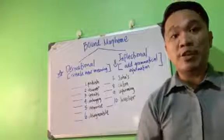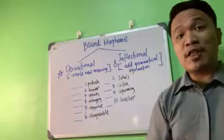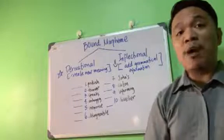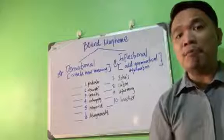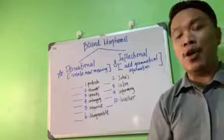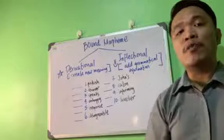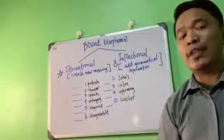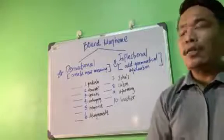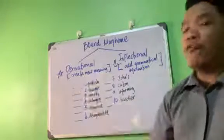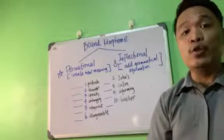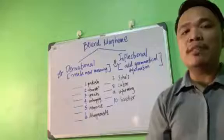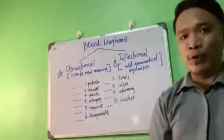Today, we're going to differentiate between derivational morphemes and inflectional morphemes. These morphemes are bound morphemes. As we all know, bound morphemes are dependent morphemes that cannot stand on their own. They need to be attached to the free morpheme so that they can actually stand on their own. By nature, they cannot — they are dependent. Now, derivational morphemes function to create a new word or create new meaning to the word. On the other hand, inflectional morphemes just add grammatical information to the word.